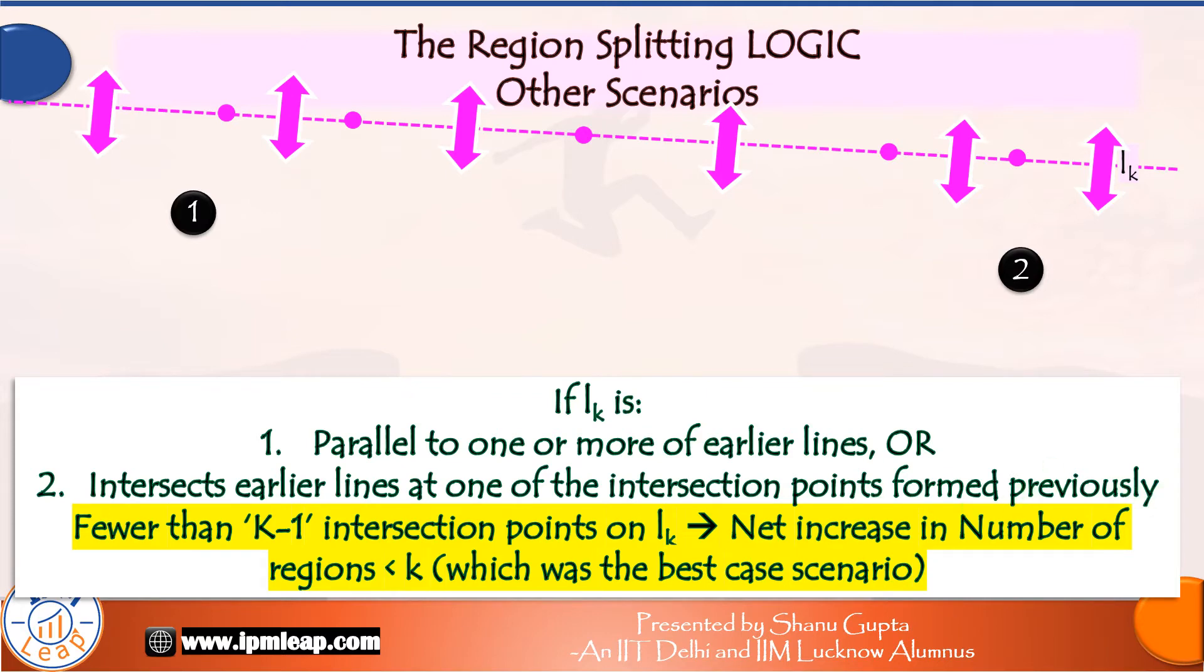Let's take the example of three lines. If the third line is parallel to the other two, these three lines won't intersect at all. And so, this pink line will pass through only one region of this plane, splitting it into two parts. Net increase is only one region.